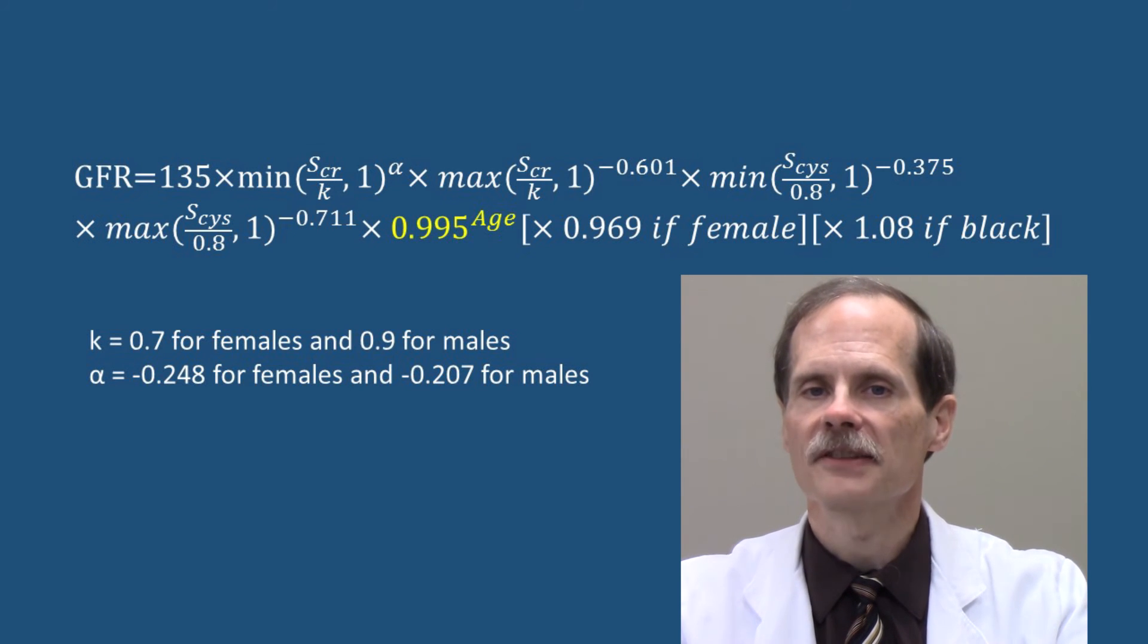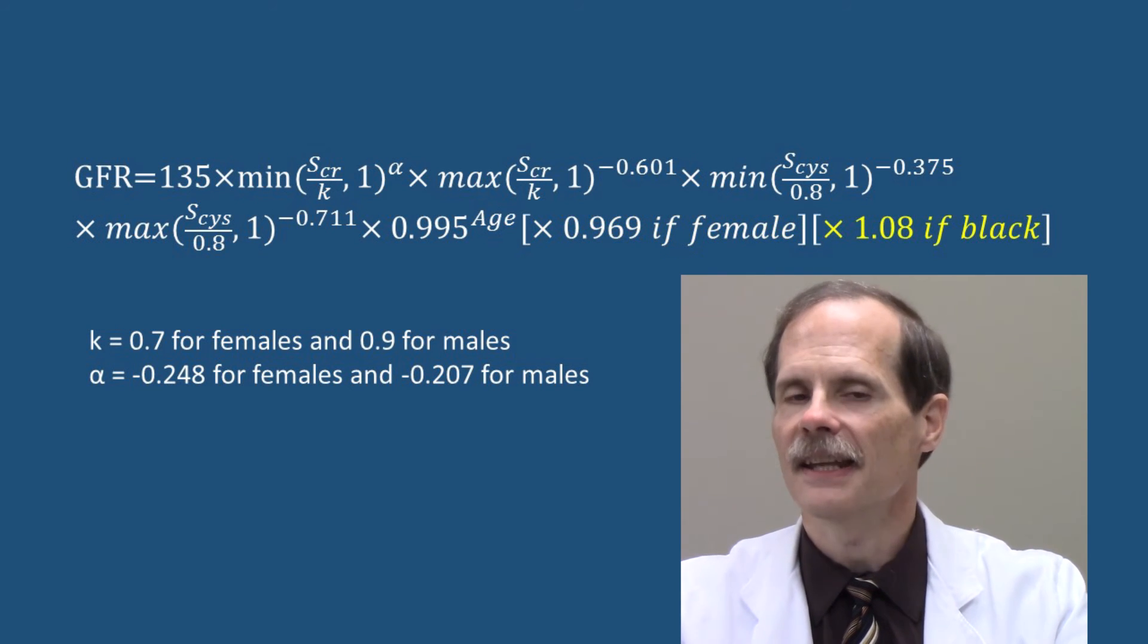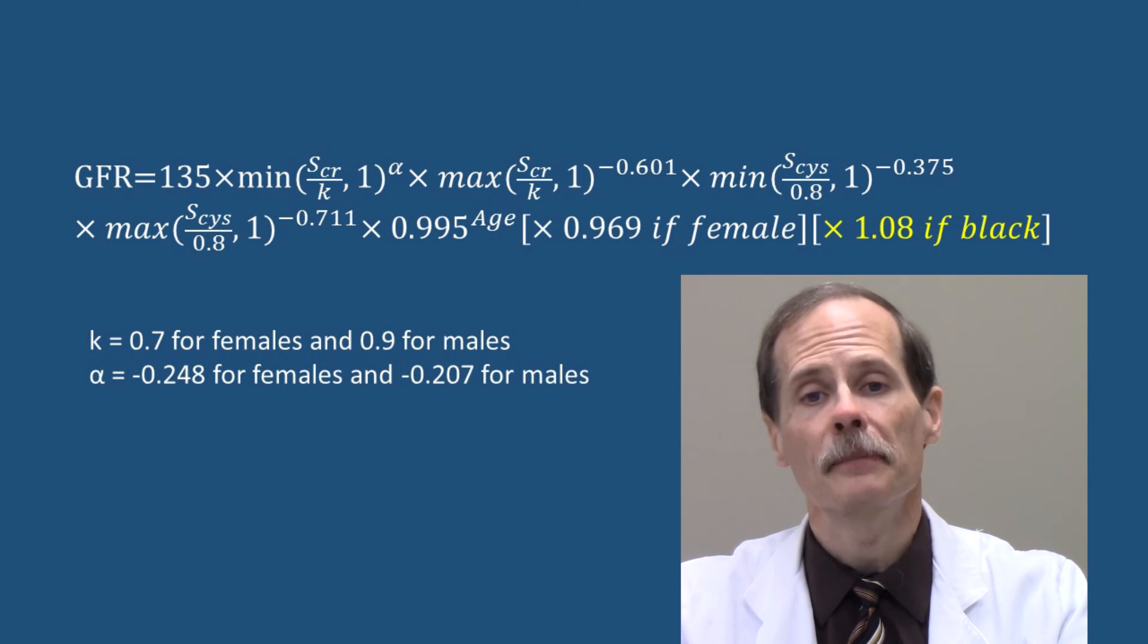0.995 is raised to the power of the patient's age in years. The value is then multiplied by 0.969 if the patient is female and again by 1.08 if the patient is black.